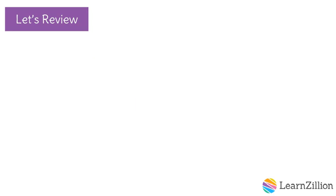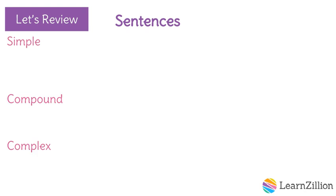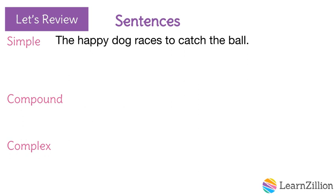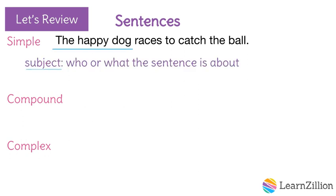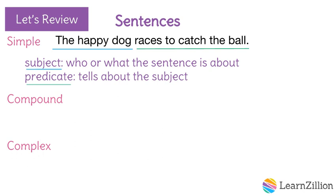Before we begin, let's review sentences. There are three types of sentences: simple, compound, and complex. A simple sentence has one subject and predicate, such as 'the happy dog races to catch the ball.' The subject is 'the happy dog' — it tells who or what the sentence is about. The predicate is 'races to catch the ball' — it tells about the subject.